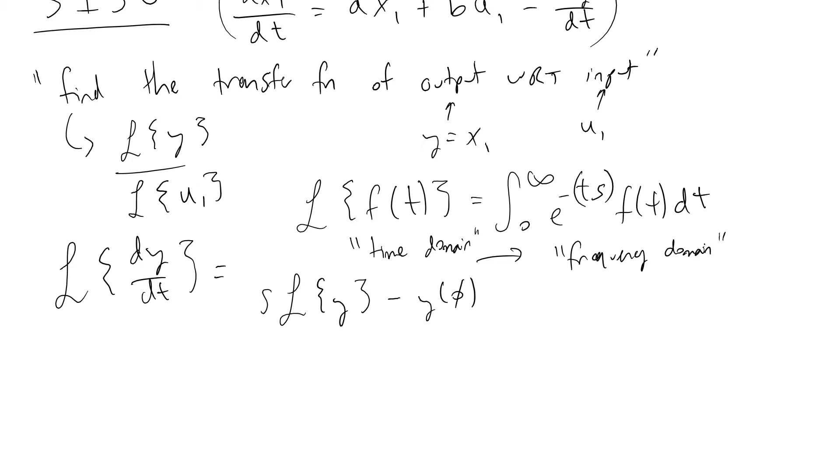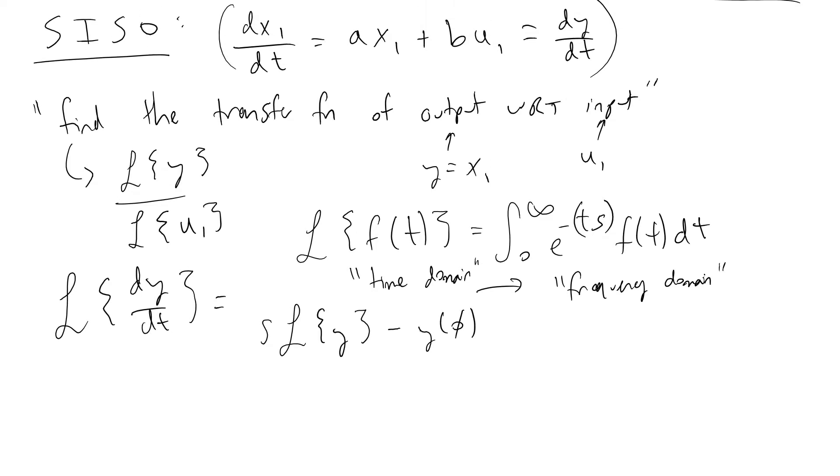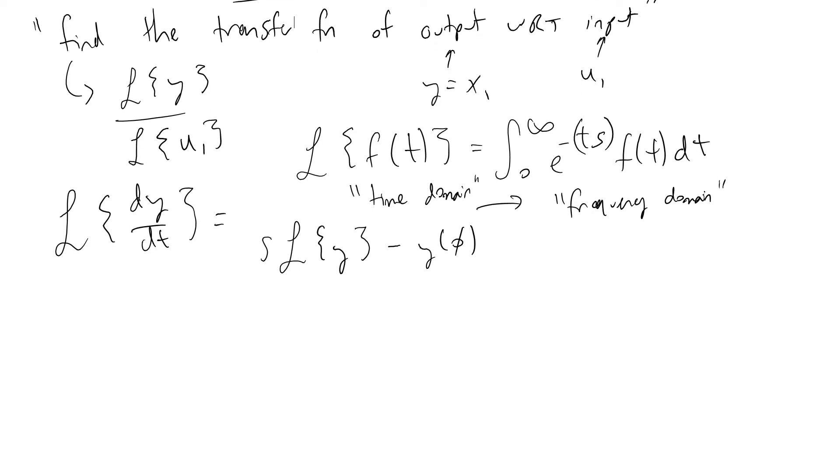And so this would be the left-hand side of the equation that we have in our SISO system above. And typically, because y is a deviation variable, meaning it's the difference between the steady state or that a value, whatever value you're interested in minus that value at steady state.